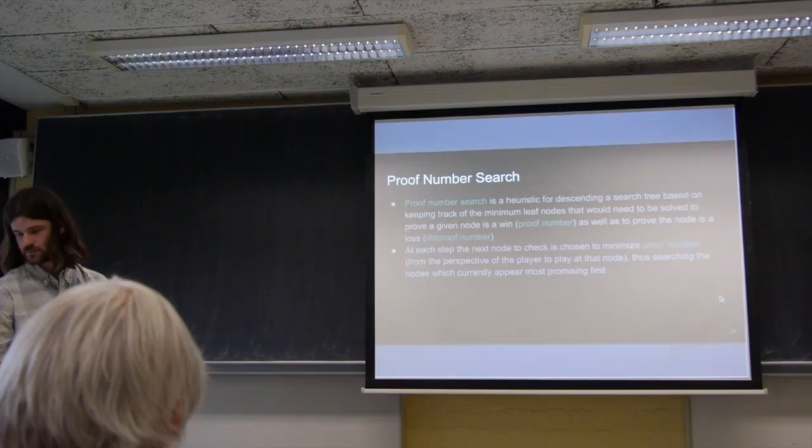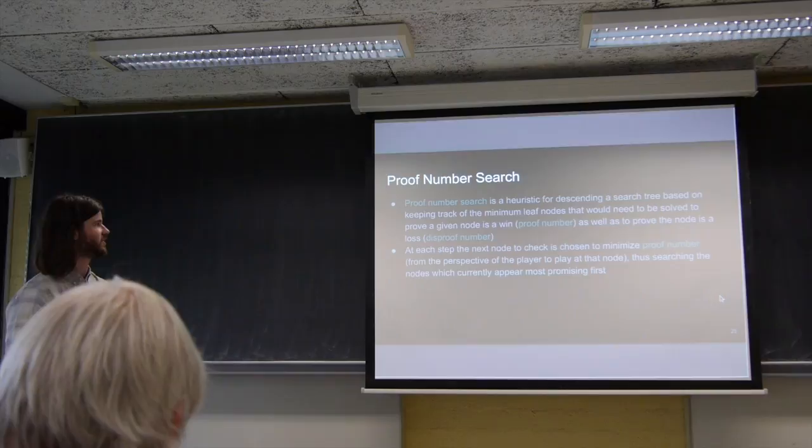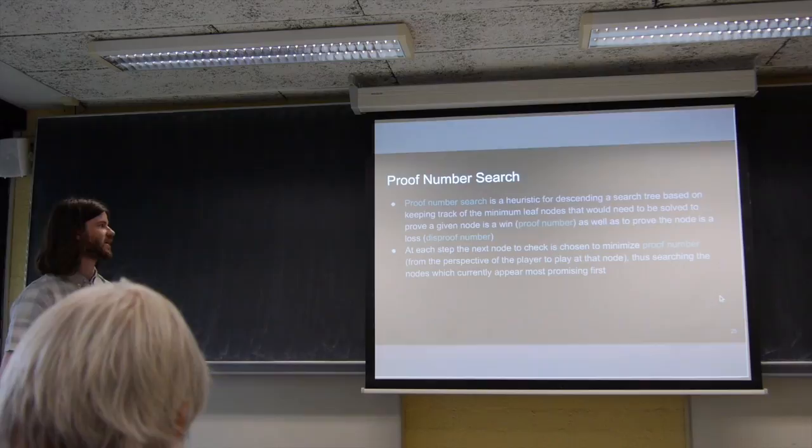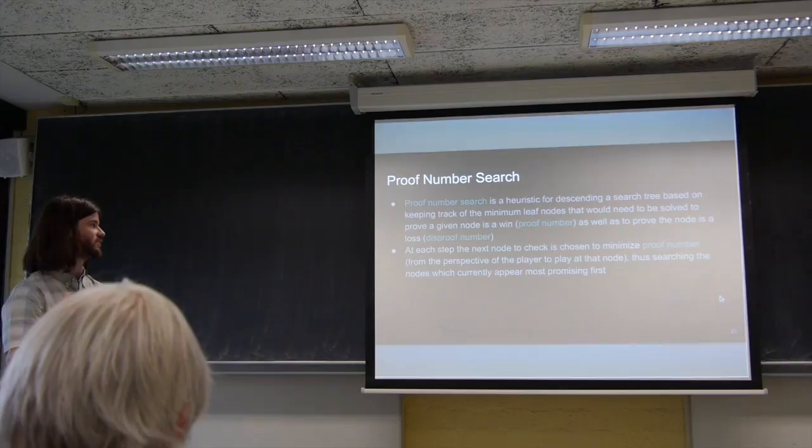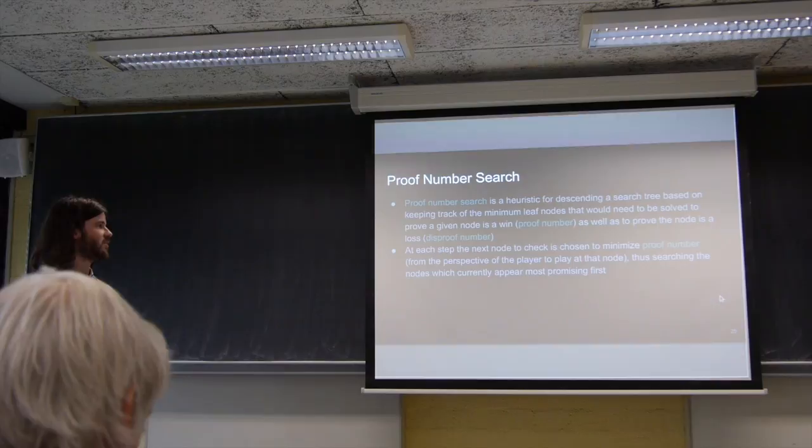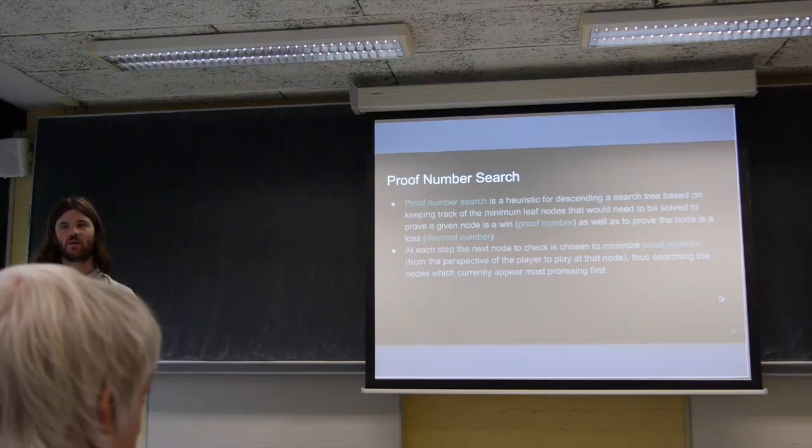And then the main engine of our solver, which most people are probably fairly familiar with, is proof number search. In case you're not, it's basically just a heuristic you use for descending down search trees. So you basically have a proof number indicating the minimum number of leaf nodes you would have to find the value of to prove a state is a win and then a disproof number, which is the same thing but to prove a state is a loss. And then at each step, you always take a step down to the node that minimizes the proof number from the perspective of the player to play. So you're basically playing moves that appear promising in terms of minimum work you need to do to learn its value.